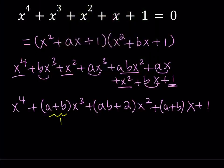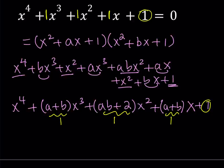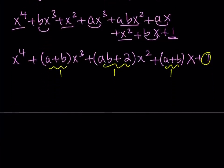Setting this equal to the original equation, the coefficients are determined. The coefficient of x cubed is one, so a plus b equals one. The coefficient of x squared is also one, so ab plus two equals one, which means ab equals negative one. And a plus b equals one is verified again for the x term. So we have two equations: a plus b equals one, and ab equals negative one.